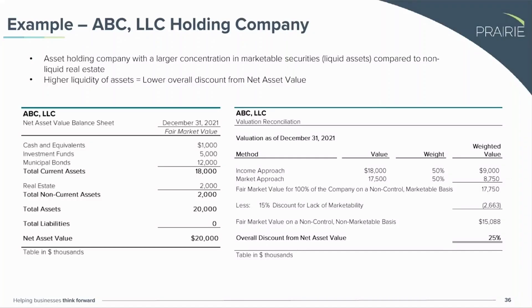Examples are always helpful to put everything into perspective. Our first example goes back to the asset holding company scenario — an entity with a larger concentration in marketable securities, so more liquid assets compared to non-liquid real estate. In general, higher liquidity of assets equals a lower overall discount from that asset value.